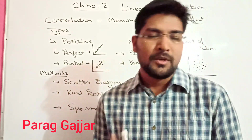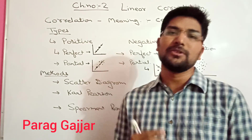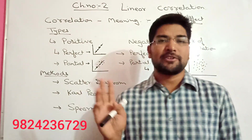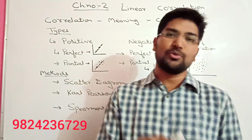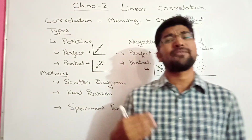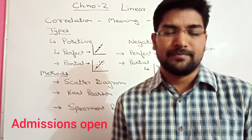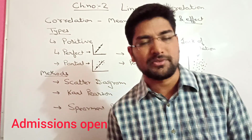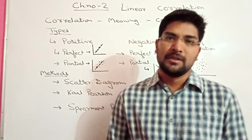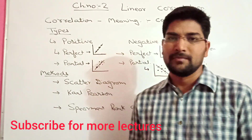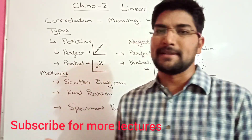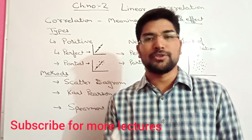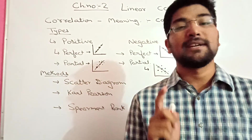Now coming on to positive correlation, which has two types: perfect positive and partial positive. Perfect positive means both variables move in the same direction, and the proportion of change in X is exactly the same proportion of change in Y — same direction and same proportion. That is perfect positive. Partial positive means both move in the same direction, X increases and Y also increases, but not in the same proportion — there is a slight difference. That is known as partial positive.